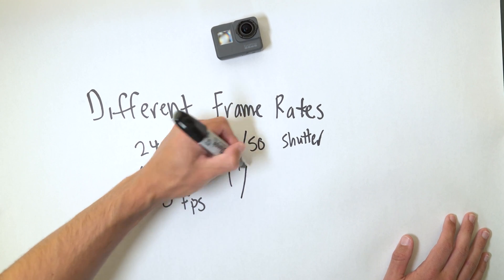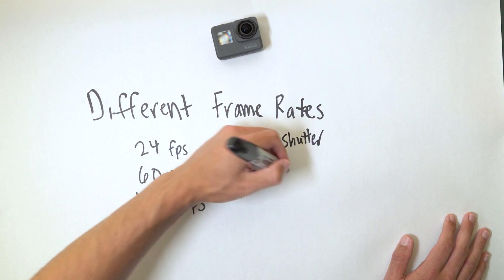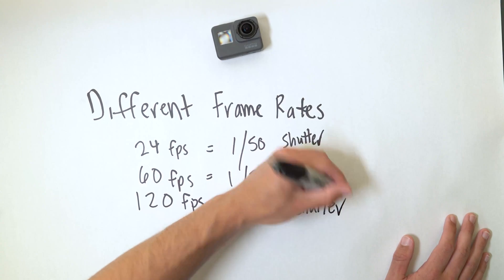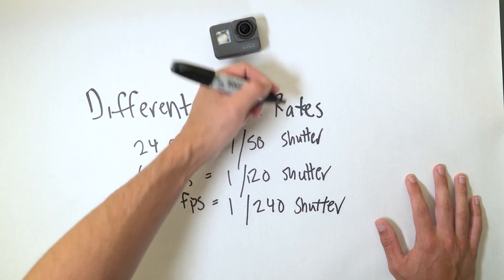The general rule is to always double your shutter speed from what your frame rate is. So if you're shooting at 60fps, set your shutter speed to 1/120. And if you're shooting at 120 frames per second, set your shutter speed at 1/240. I'm gonna say this many times: double your shutter speed to your frame rate. If you're at 24fps it doesn't have to be 1/48th — since many cameras don't have that setting, 1/50th is close enough and you'll still get that nice cinematic motion blur.